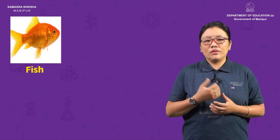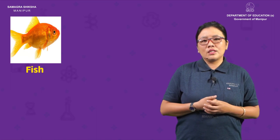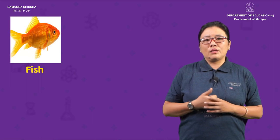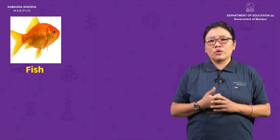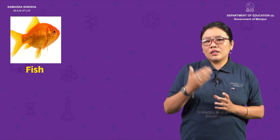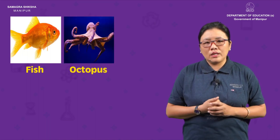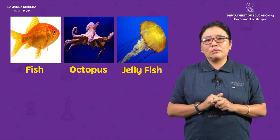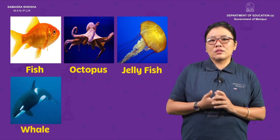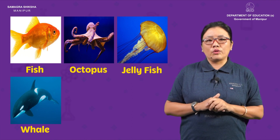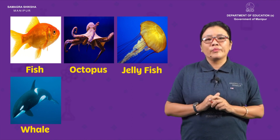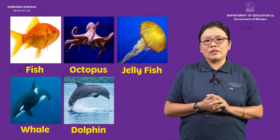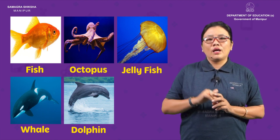Fish are water animals. There are water animals like octopus and jellyfish — these are sea animals. Whales are the biggest animal. Dolphins are also water animals.